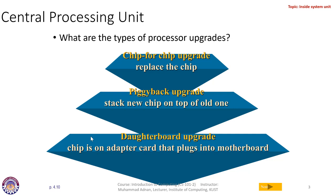A GPU (graphics processing unit) is also a kind of processor, and your modem and network card are also types of small processing units that enhance the processing speed of a computer. The central processing unit's job is to execute instructions, give instructions, and coordinate the different components of your computer system. There are many other processors that work together with the CPU to carry out work.